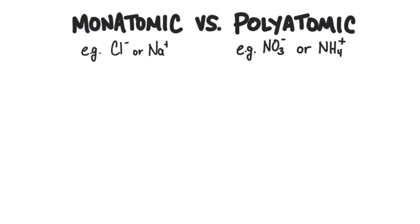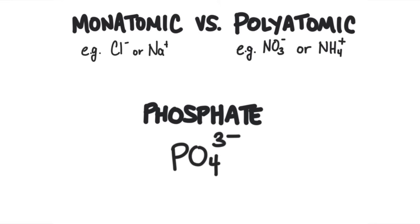Ions are not always monatomic — that is, made up of a single atom. Sometimes multiple atoms are stuck together already, and the resulting group of atoms has an overall positive or negative charge. Phosphate is a polyatomic ion — an ion composed of multiple atoms. Phosphate has the formula PO₄ with a 3− charge. The entire group of atoms has a 3− charge, just like a single nitrogen atom has a 3− charge.